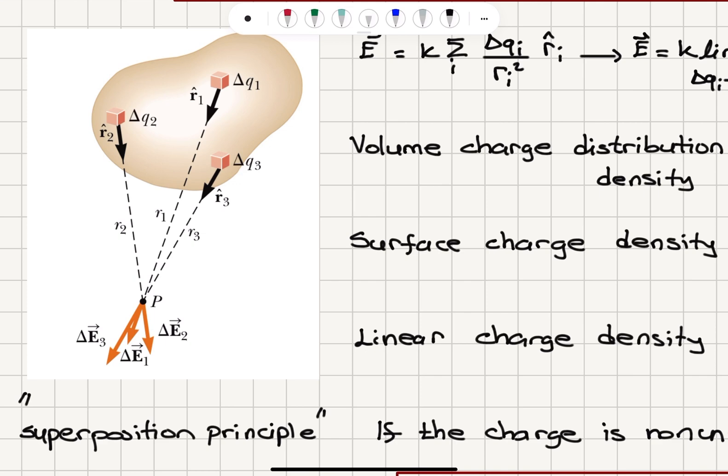delta Q2, delta Q3, etc. So these are differential charges. So the total object basically has a continuous distribution of charge.